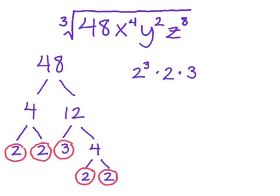Next up we have the x's. x to the 4th — and I want to write this using 3 as an exponent, meaning grouping them together into groups of 3. Since there are 4 x's being multiplied together, I can think of this as x cubed — 3 of them — times the 1 that's left over. All of those together make up my x to the 4th.